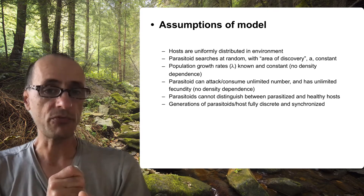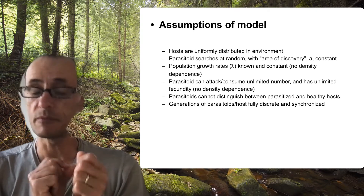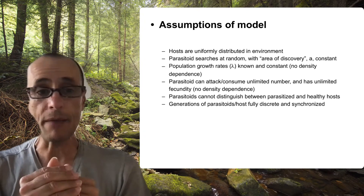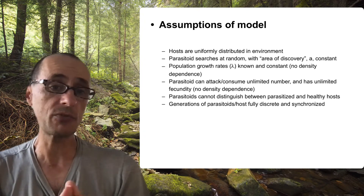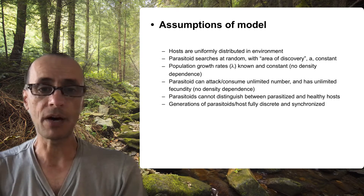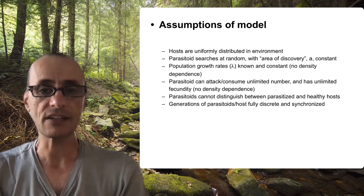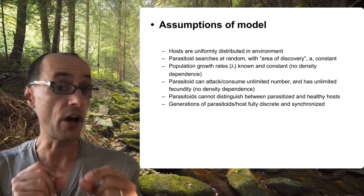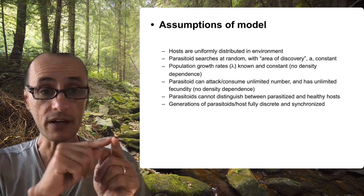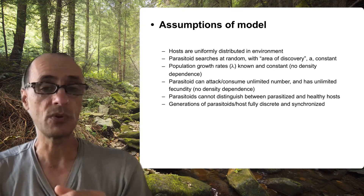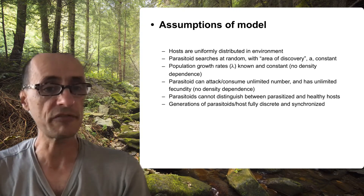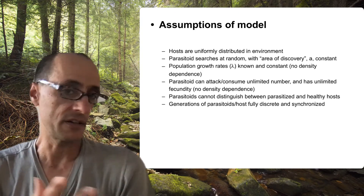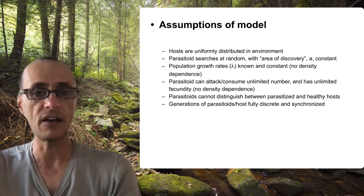The population growth rate of the host has a growth rate lambda. This is the finite rate of increase based on the discrete time step model. So there's no density dependence in this, which means if there's no other mortality agent and lambda is greater than one, this population is going to grow to infinity. If lambda is one, the population replaces itself. If lambda is less than one, the population declines all on its own, but there's no density-dependent feature.